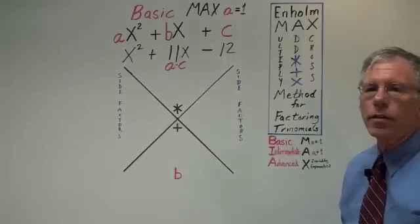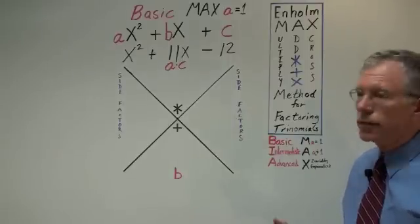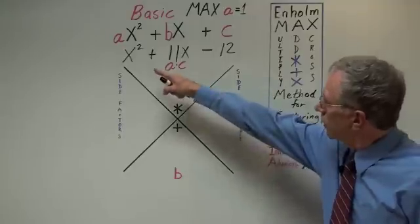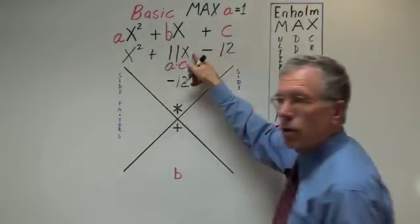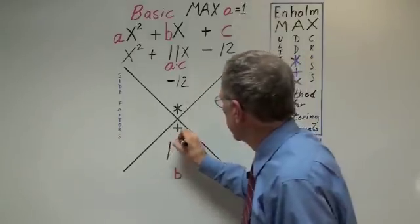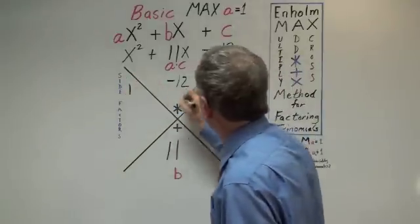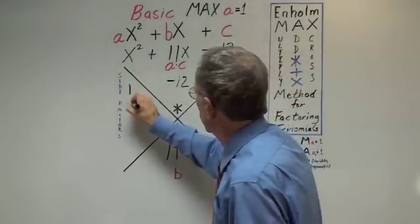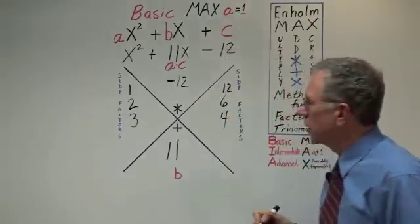Here we have a larger negative number for c. So let's just get going. Because a is 1, we just put negative 12. We bring the 11 straight down. Again, you do the side factors, 1, 12, 2, 6, 3, 4.